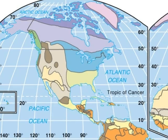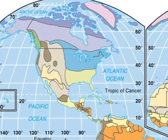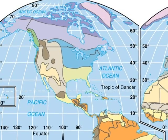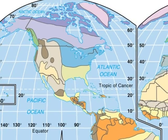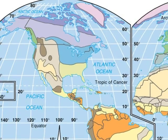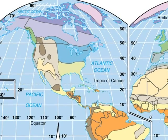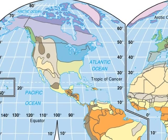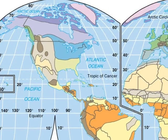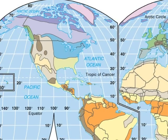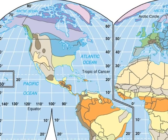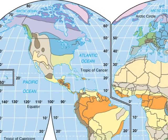Important physical processes include climate, vegetation, soil, and landforms. The map you're looking at right now is the Koppen system, which has five major climatic regions and several subtypes.